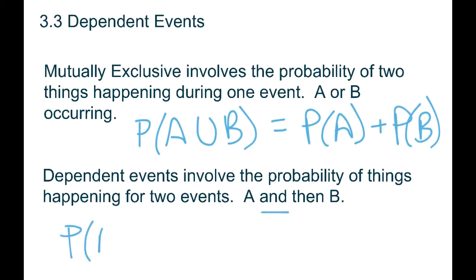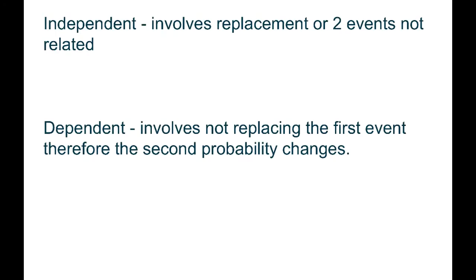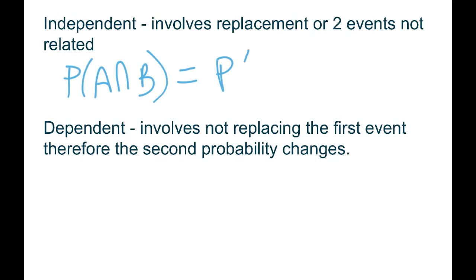For these events, we're looking at the intersection — A and then B occurring. When we're looking at independent and dependent, we're looking at two different events and asking: are they related? Does the second event change because of what happened in the first? For independent events — like dice — the result of the first roll doesn't affect the second. Because it's 'and,' we multiply the two probabilities together.